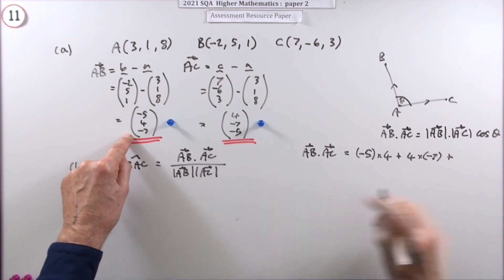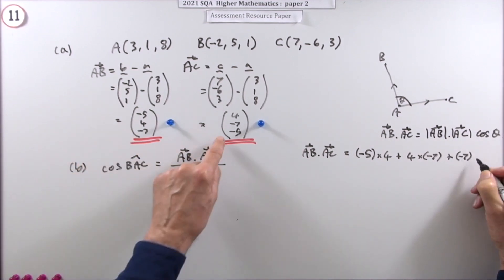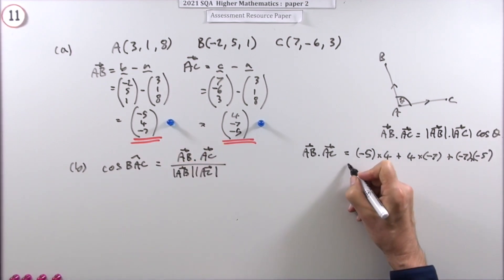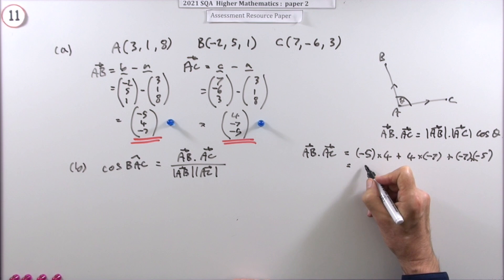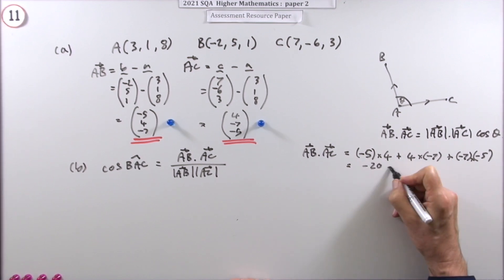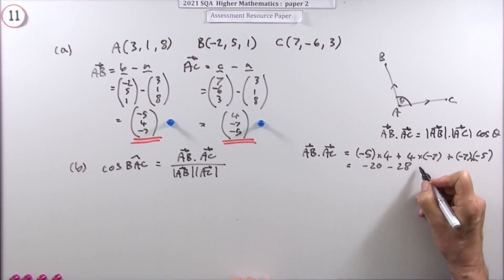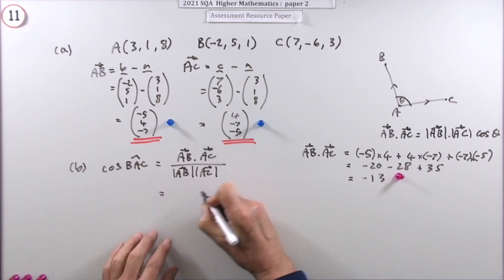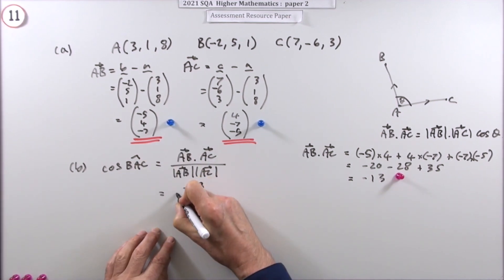And then do the same with the Z components. It's -7 times -5. So that means you've got -20, -28 plus 35. So 35 away from 40 and then just call it negative. It's -13. So that's worth a mark. That's what's going to go on top here. So I've got -13 over.